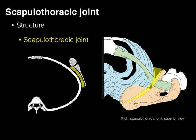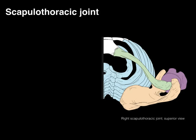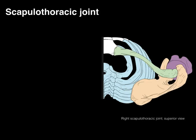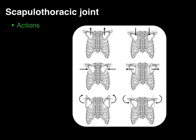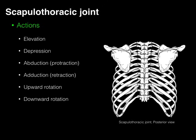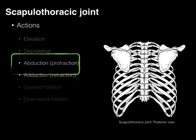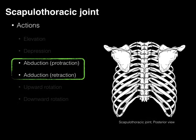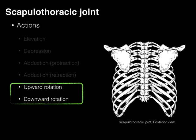What moves the scapulothoracic joint is really just the scapula floating on the ribcage with some fascia in between them. Now let's talk about the actions or the movements of the scapulothoracic joint. There are six primary actions in pairs: elevation and depression, abduction and adduction, and upward and downward rotation.